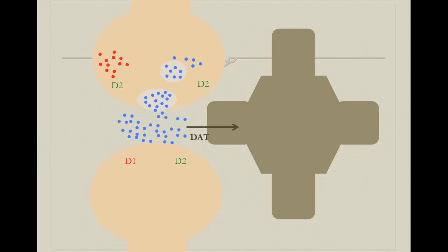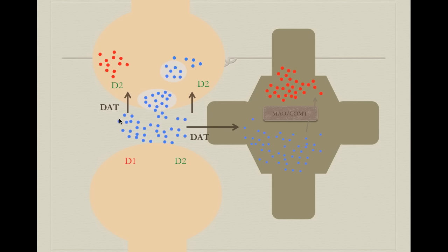Upon release into the synaptic cleft, dopamine must be recaptured. Astrocytes and presynaptic neurons have the dopamine transporter (DAT), which takes up dopamine into the cells, where MAO and COMT metabolize it into homovanillic acid, which has no excitatory or chemical signaling properties. It's important to note that DAT can also transport and recapture noradrenaline, though it is more specific for dopamine. This illustrates how many catecholaminergic messengers share properties and transporters.